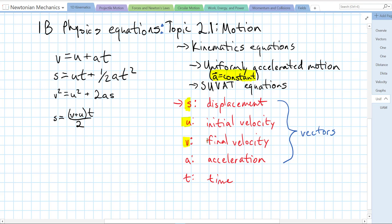V is final velocity, also units of meters per second. A is acceleration, units of meters per second squared or meters per second per second. And T is time, units of seconds.